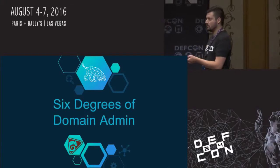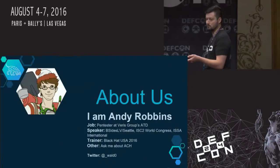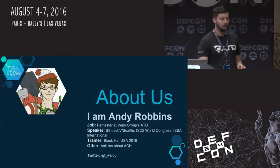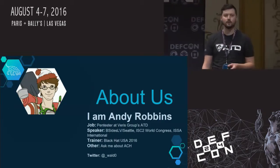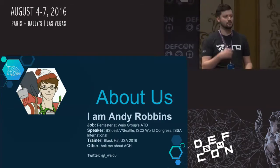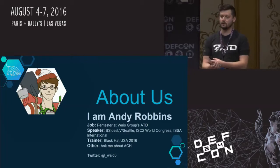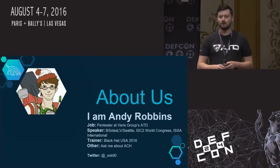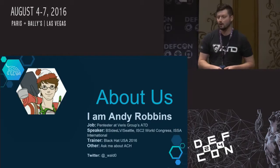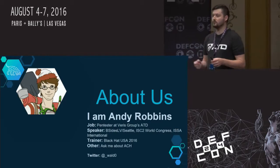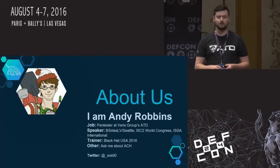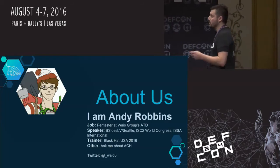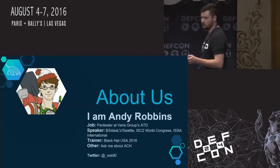About us. My name is Andy Robbins. I've been a professional penetration tester and red teamer for four years. I originally cut my teeth in the financial services industry. All three of us work at Varus Group's adaptive threat division.